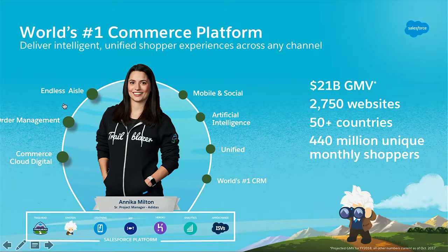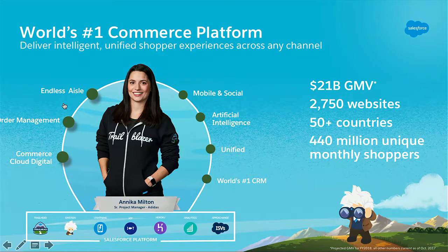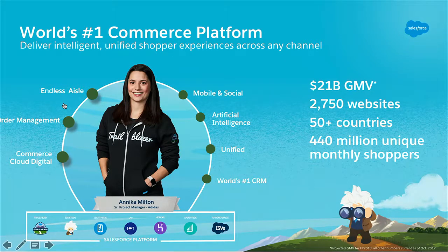All this is getting delivered at massive scale. In this fiscal year alone, Commerce Cloud will power 21 billion dollars of gross merchandise value across all of our customers combined. We power over 2,700 websites in over 50 countries. Last year we were doing 440 million unique shopper visits each month — more than Amazon, which does approximately 200 million. This holiday season we're anticipating half a billion unique monthly shopper visits.